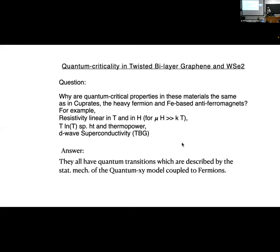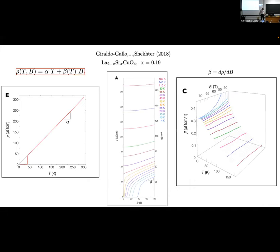So, just to give you the final answer to this question, the answer is that they all have quantum transitions, which are described by this statistical mechanical model of quantum XY model, coupled in a particular way to fermions. And by particular way, I mean, that is how the fluctuations of the quantum XY model are obliged to couple to fermions. So the important part is, why are these quantum XY models? So I'm not going to talk about cuprates or heavy fermions or iron compounds. I will simply speak about tungsten diselenide and twisted bilayer graphene.